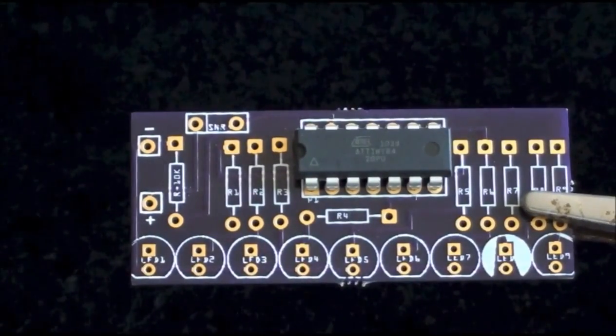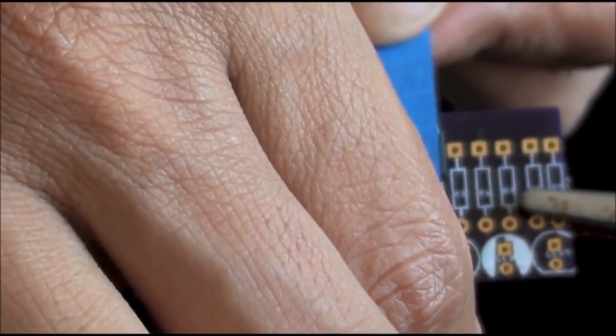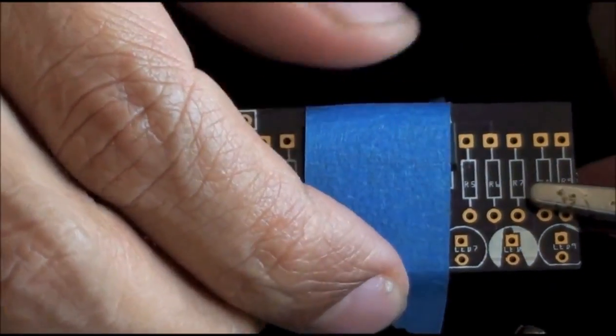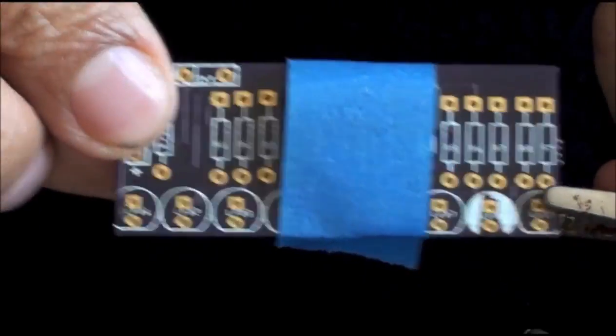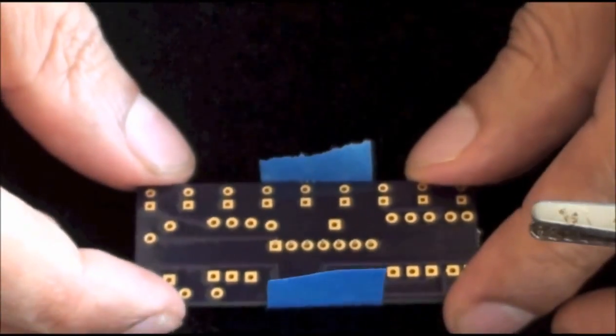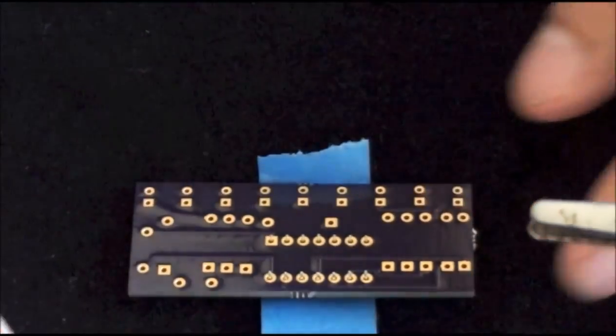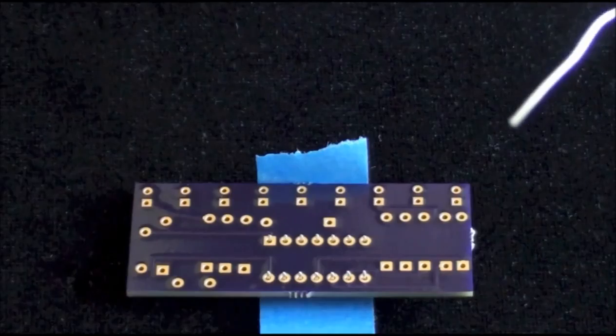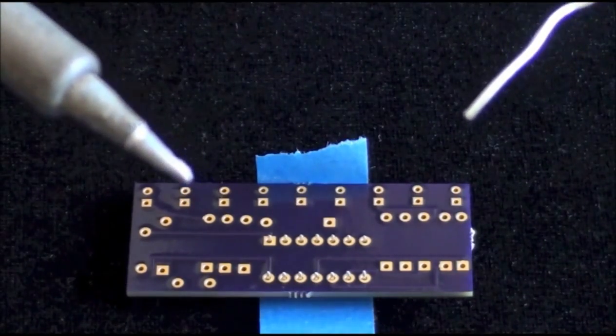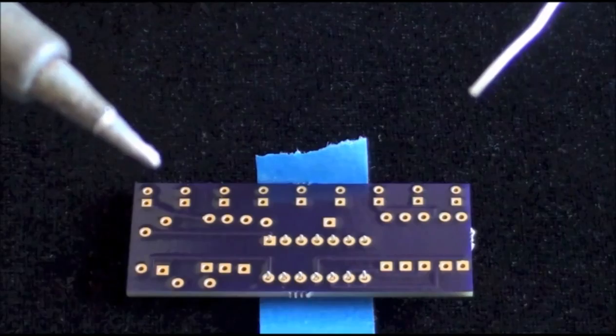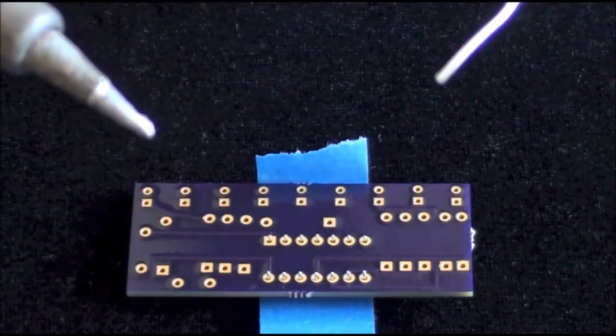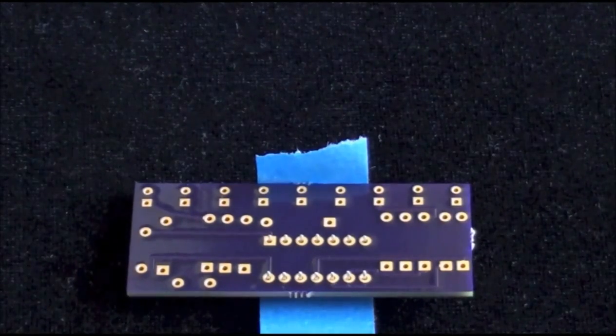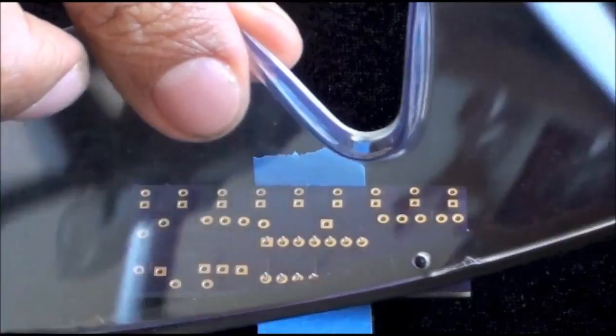We will be using tape to hold down the microcontroller while we solder it in place. We can then flip the board over and proceed with soldering. We will be using the solder wire that was provided with the kit, as well as a solder gun. For safety, we will be using protective glasses during the solder process.